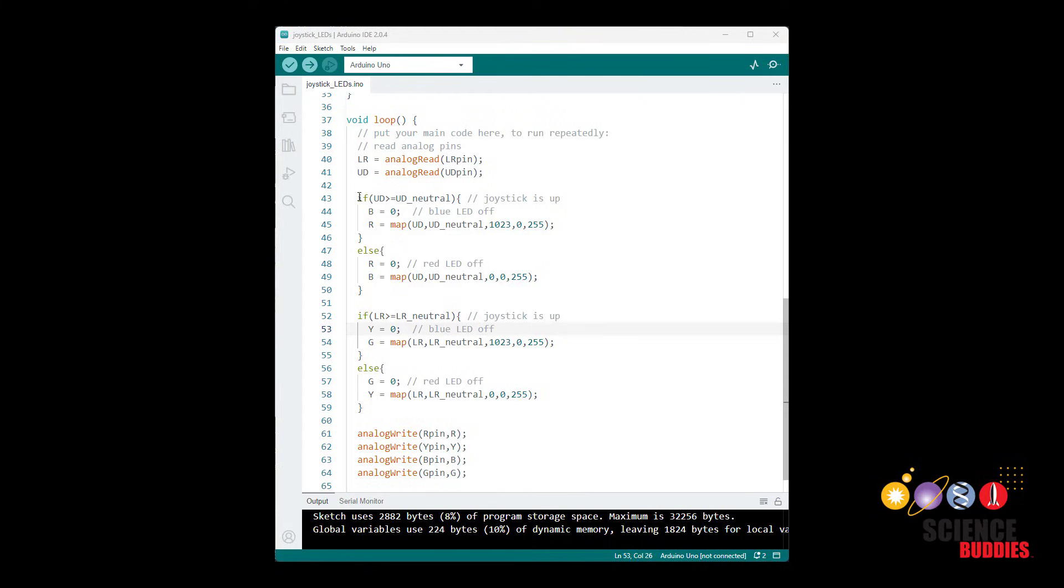Let's take a look at these if statements in a little more detail. Here I have if up down is greater than or equal to up down neutral so I have pushed the joystick up. In that case I want my blue LED to be off so I'm going to set the analog write value to zero and I'm going to use the Arduino map function to map my joystick value from the range of the neutral value to 1023 to a range of 0 to 255 which is what's accepted by the analog write command. Else means I have pushed the joystick down in which case I'm going to turn my red LED off and again use the map function to map the value for the blue LED from the joystick value to a range of 0 to 255.